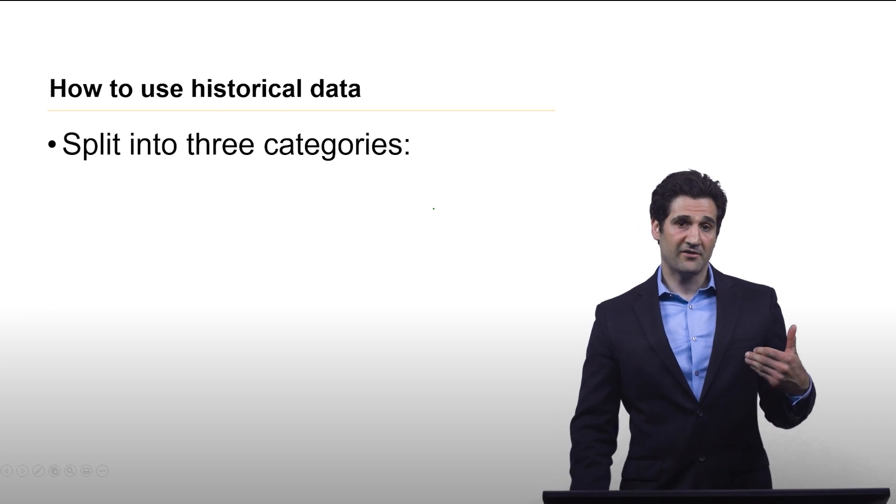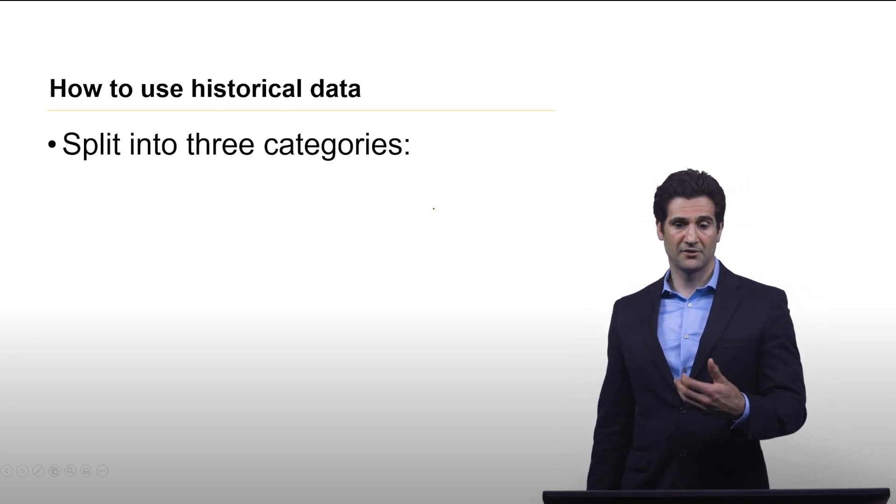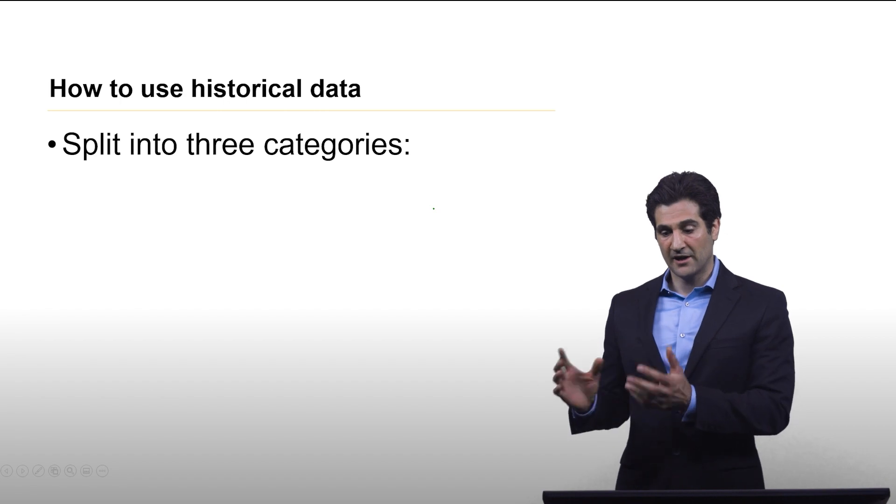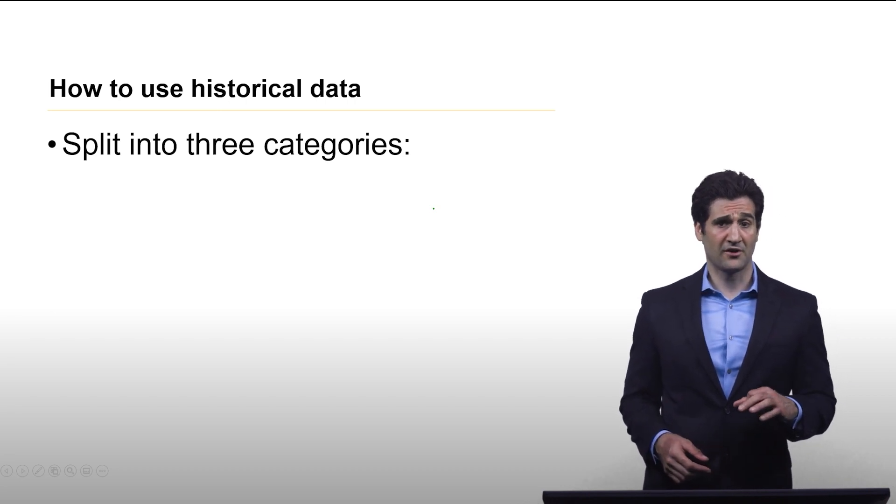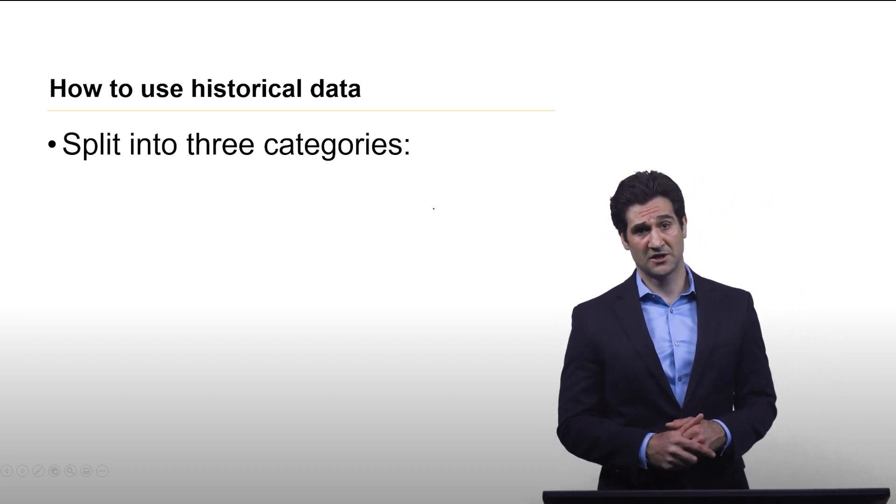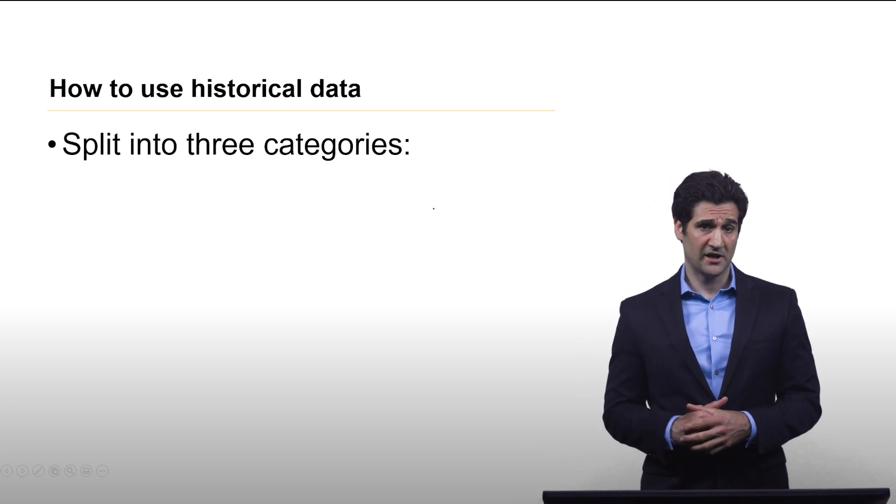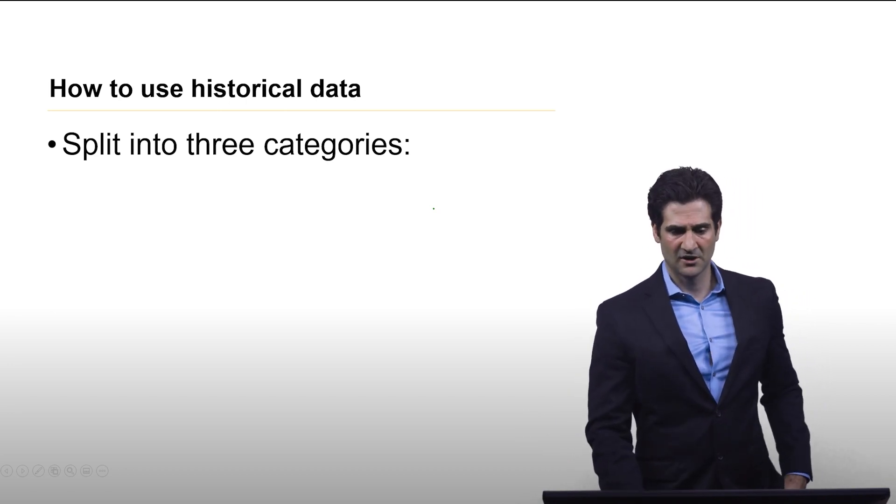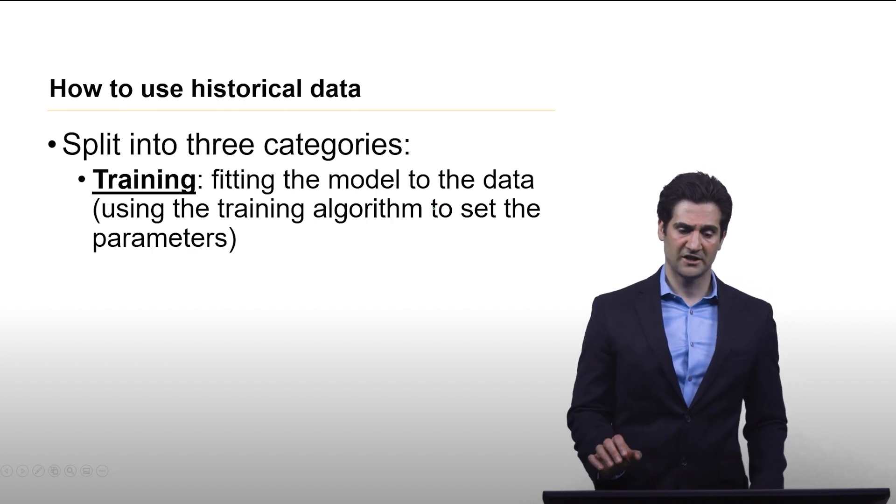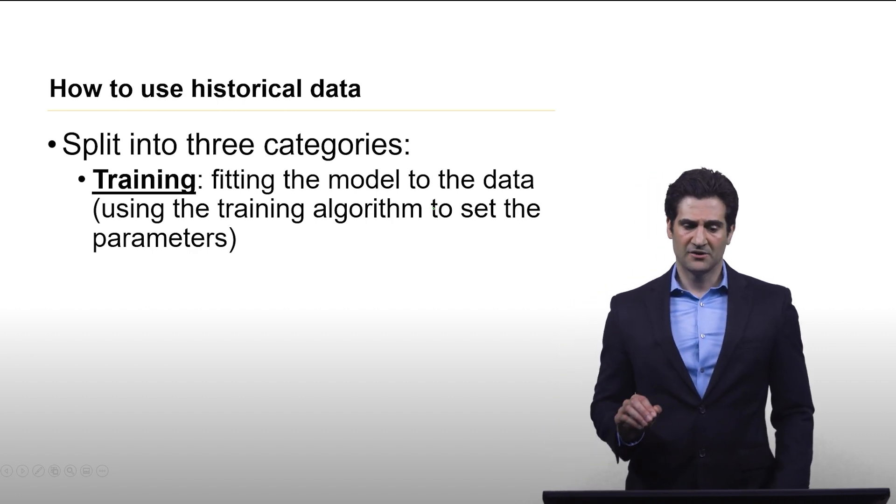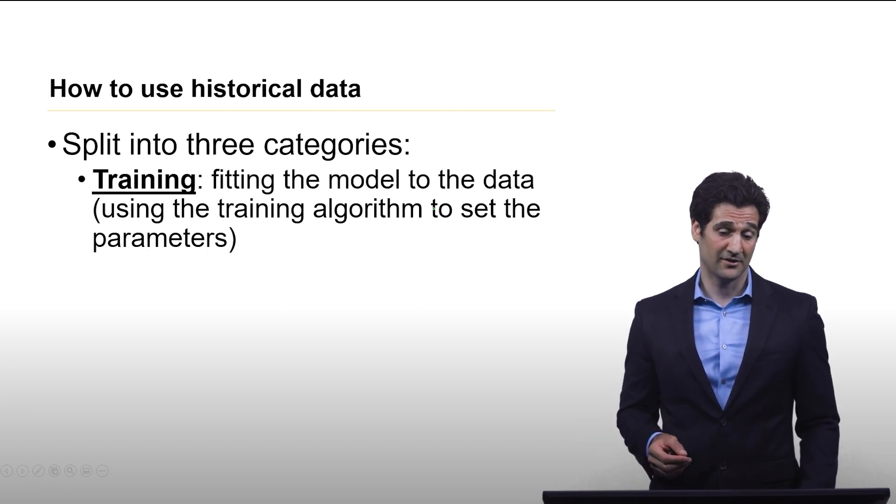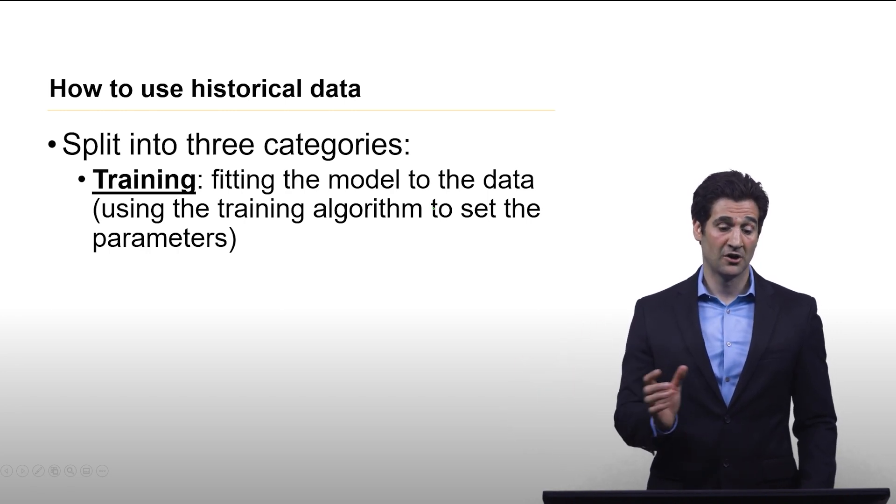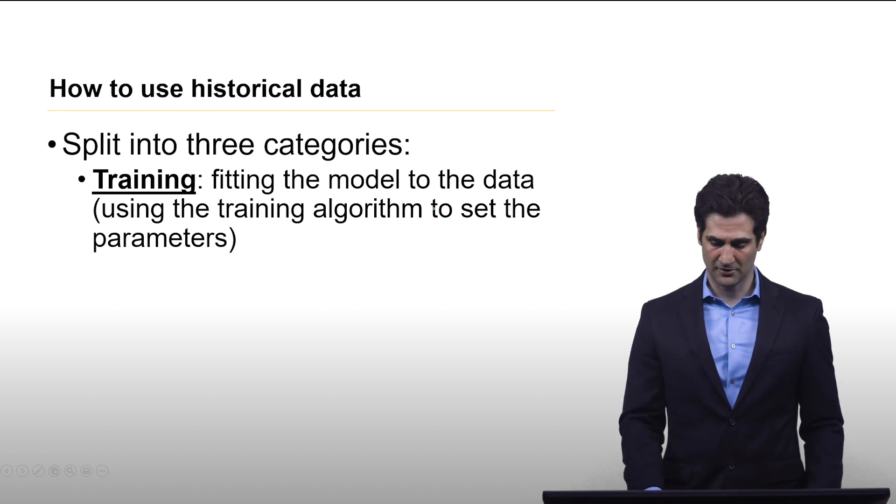We have a basic understanding of models and data. Now I have this historical data, and we talked about training and testing, and then you might have seen this other thing called validation mentioned in the lesson objectives. How do we arrange that data in a way to support our efforts? There's going to be three categories. One is training data. Training data is the data that's essentially used to set those model parameters by the training algorithm. The training algorithm is trying to fit a model to the training data, and that's solely what it's used for.